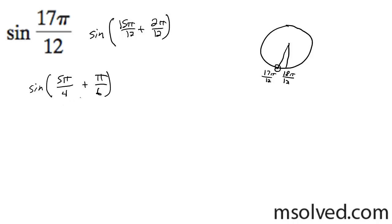We can find the values for these, so we can go ahead and solve this now. So this simply becomes sine of 5π over 4 times the cosine of π over 6 plus the sine of π over 6 times the cosine of 5π over 4.